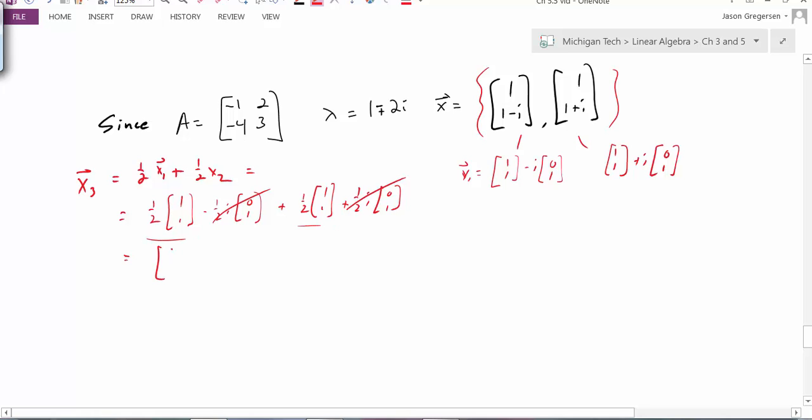And since I have half of this vector plus another half, the result is the whole vector. So x3 is really equal to 1, 1. And this should be in my eigenspace. So now let's find another vector. Let's do this again.